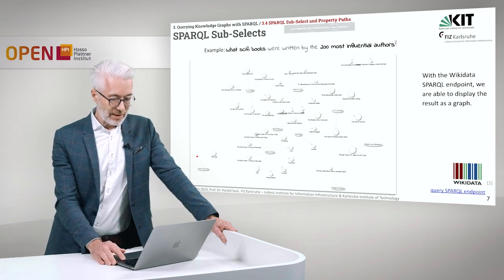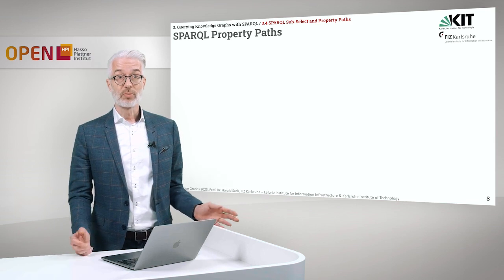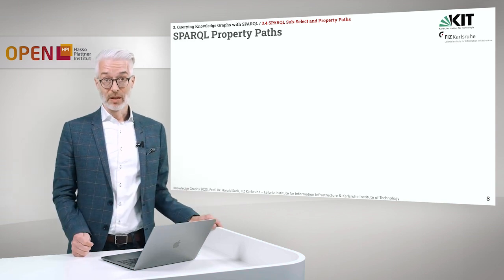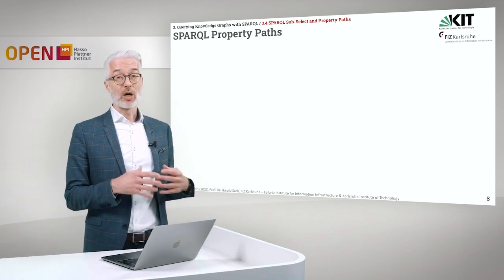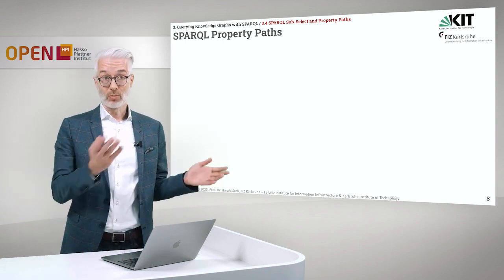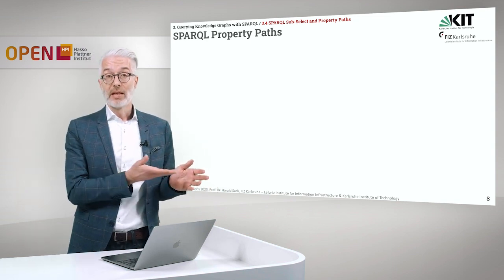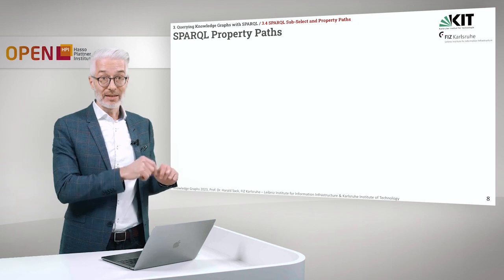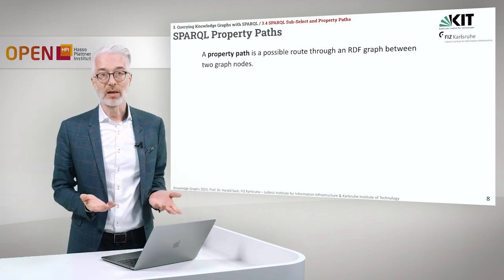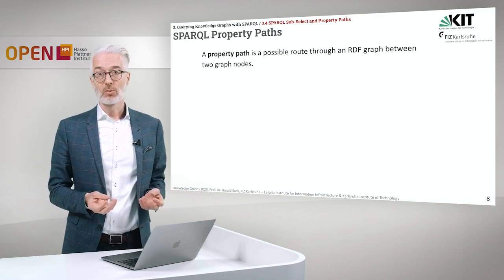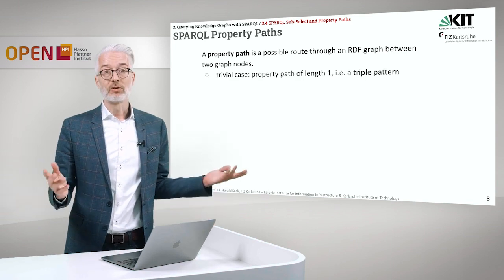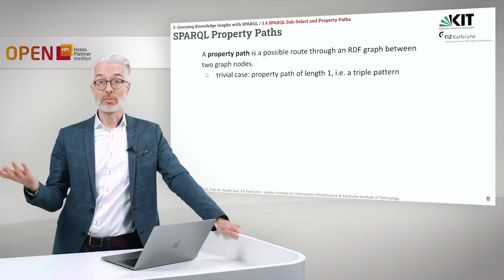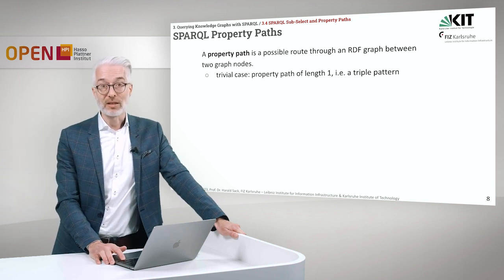In the last section of this lecture we will talk about property paths — another powerful tool for making more complex SPARQL queries. A property path is a possible route through an RDF graph between two graph nodes, following edge by edge, where edges are properties. In the trivial case, a property path has length 1, giving us the standard triple pattern from ordinary SPARQL graph pattern matching.